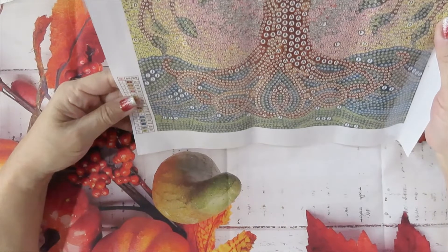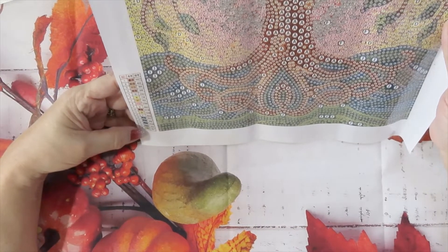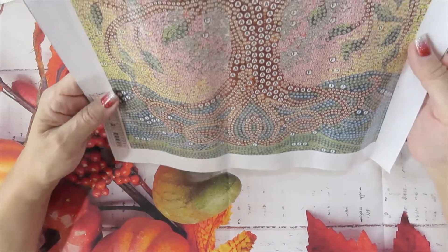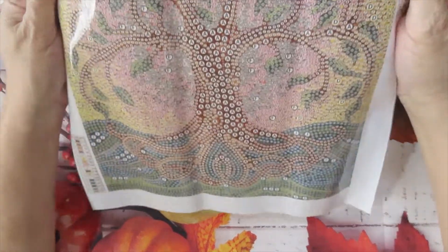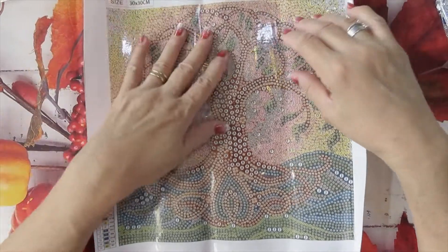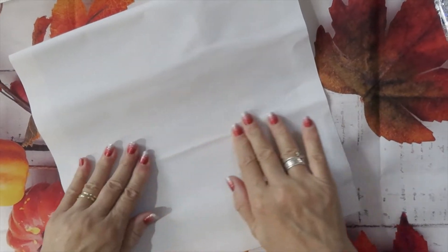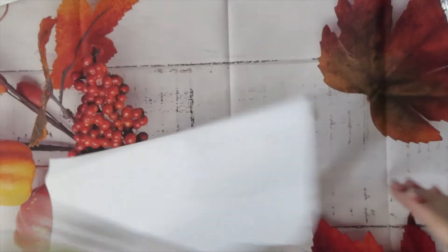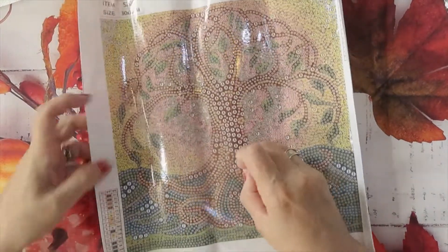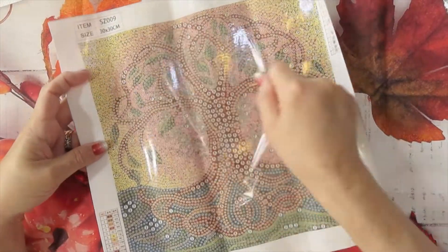It's a 30 by 30 and this one has 17 colors. It seems to be DMC codes or the equivalent. I like the colors, very earthly colors. Too bad it has that crease in there. I wonder if we could fix it because I like this one, I love this one.